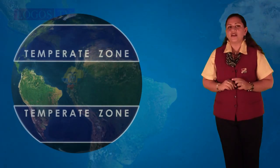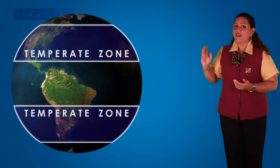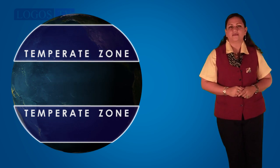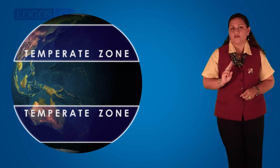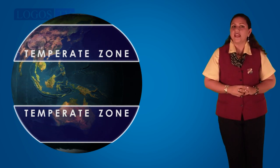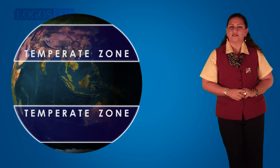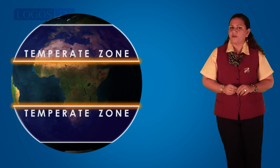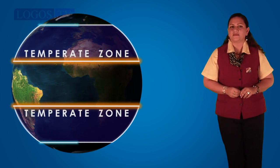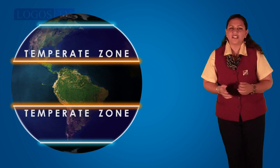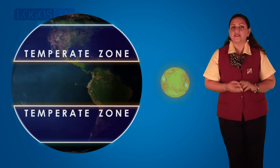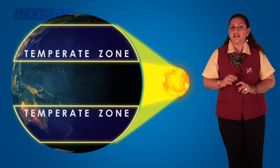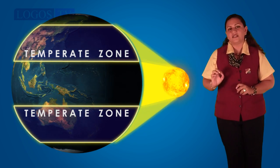The next zone, as you can see in the picture, is the temperate zone. There are two temperate zones, one in each hemisphere. They are located between the tropics and the polar circle. The temperature here is not extreme because the sun's rays are a little farther away and fall indirectly on the surface.